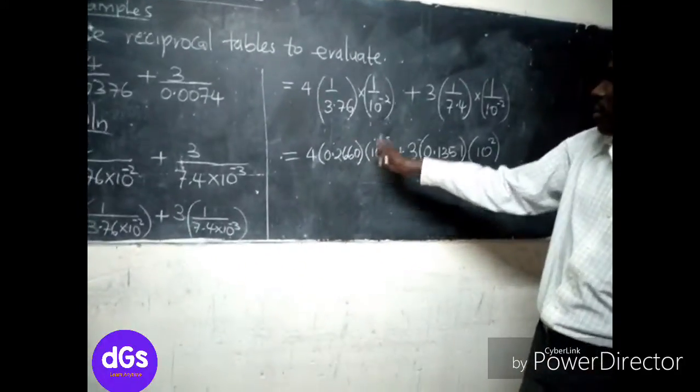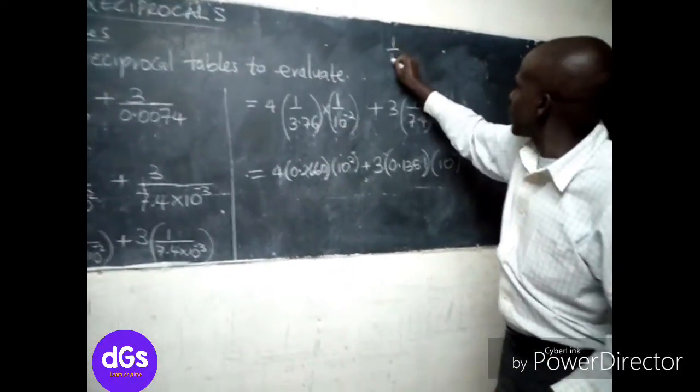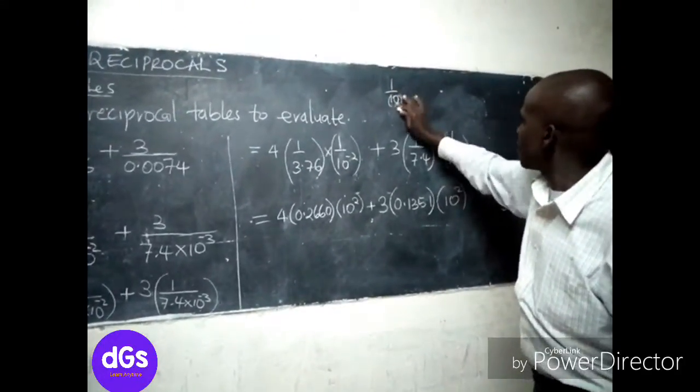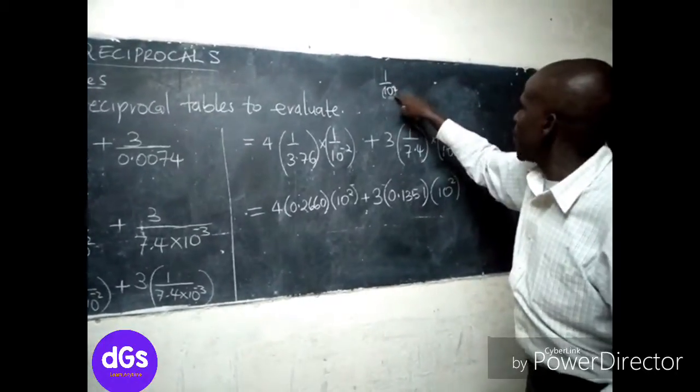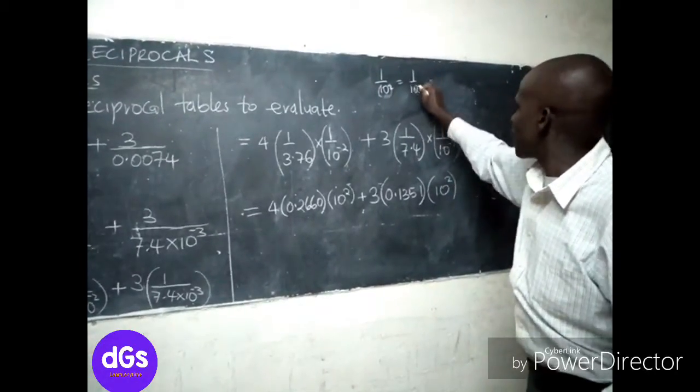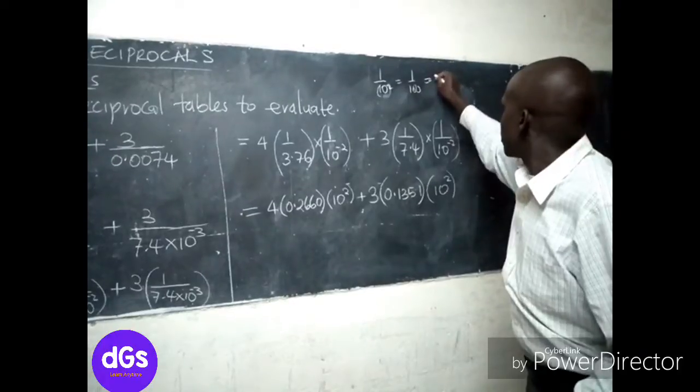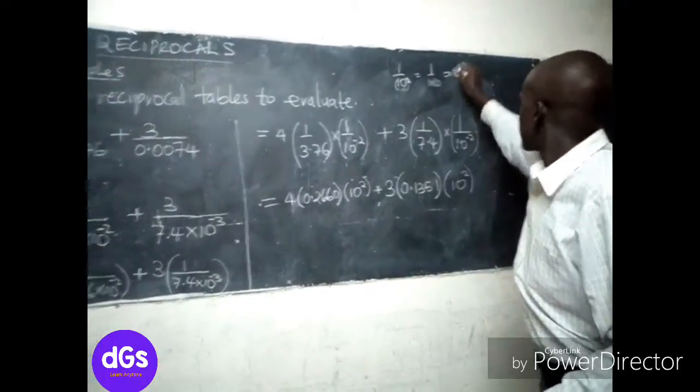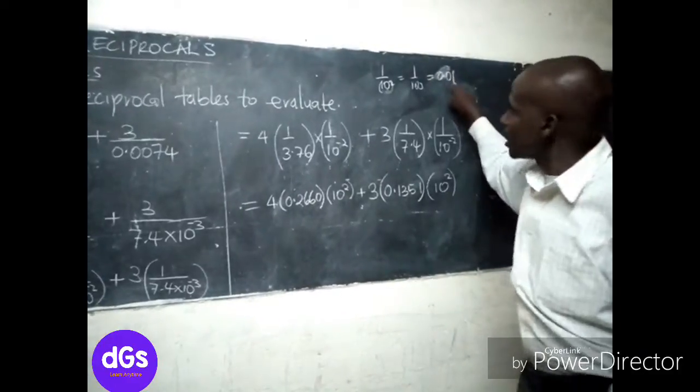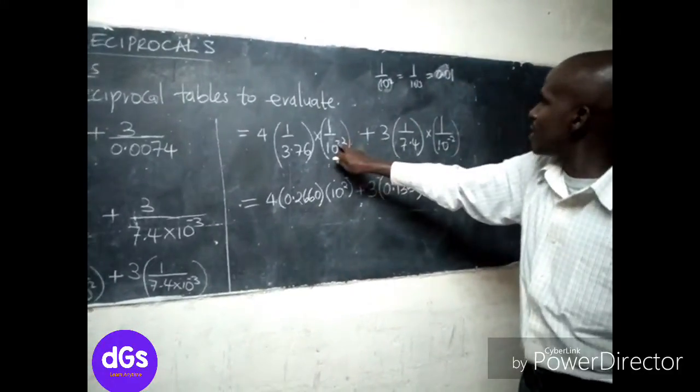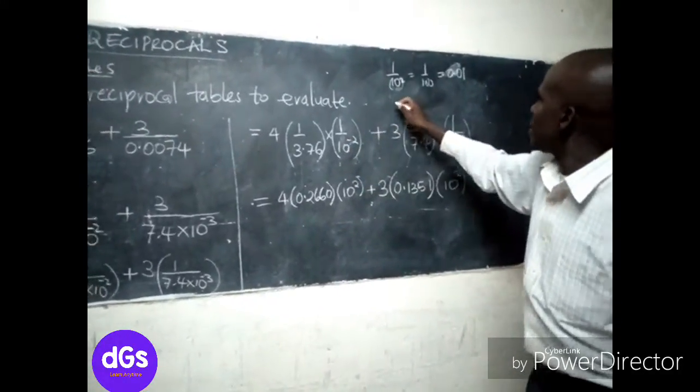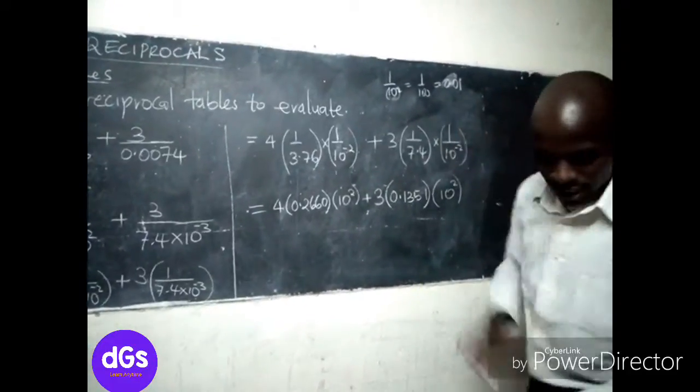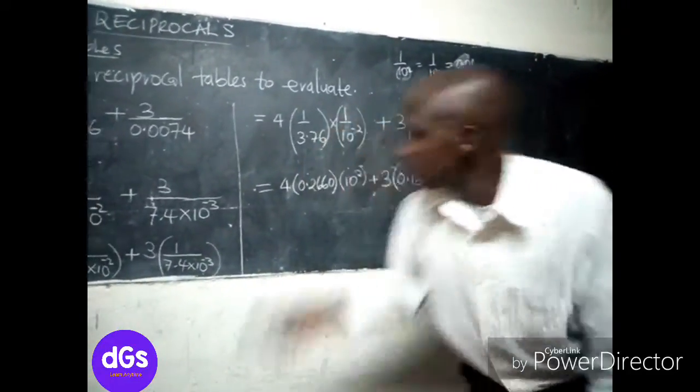If this had been 1 over 10 squared, what would we have? We'd have 1 over 100, which would mean this is 10 power negative 2, or else 0.01. So when it is negative, it means that this is...